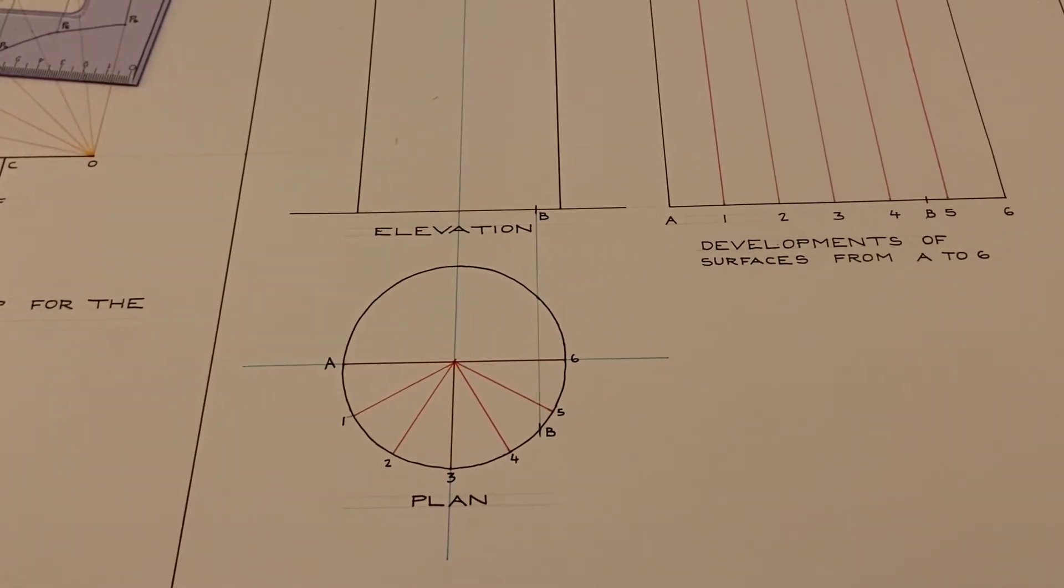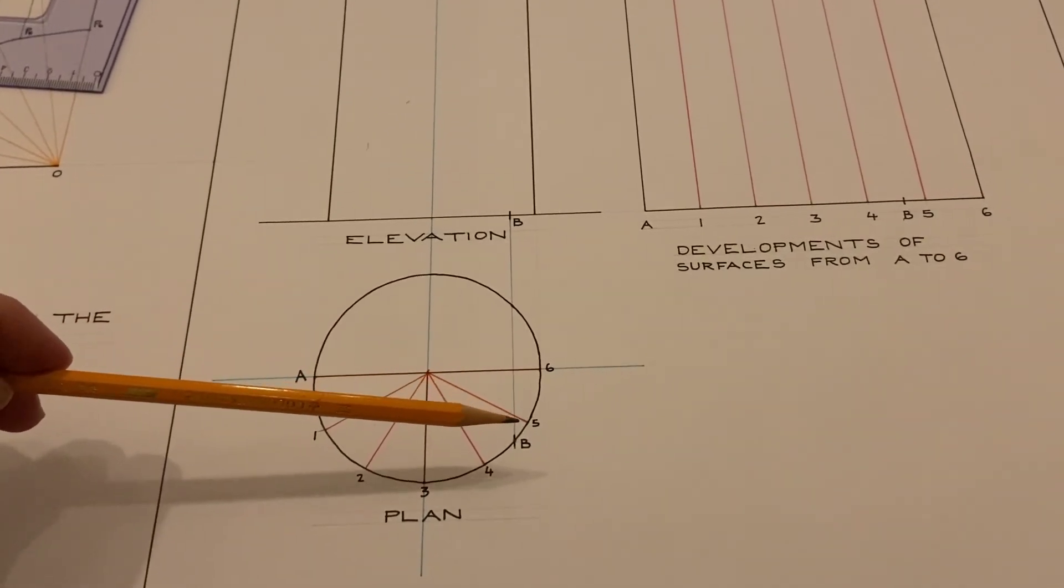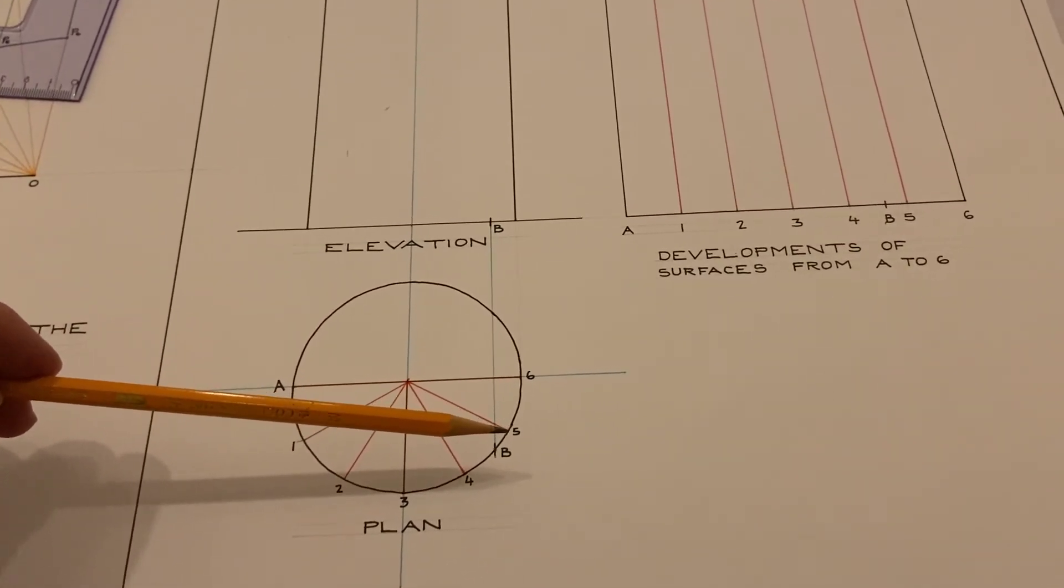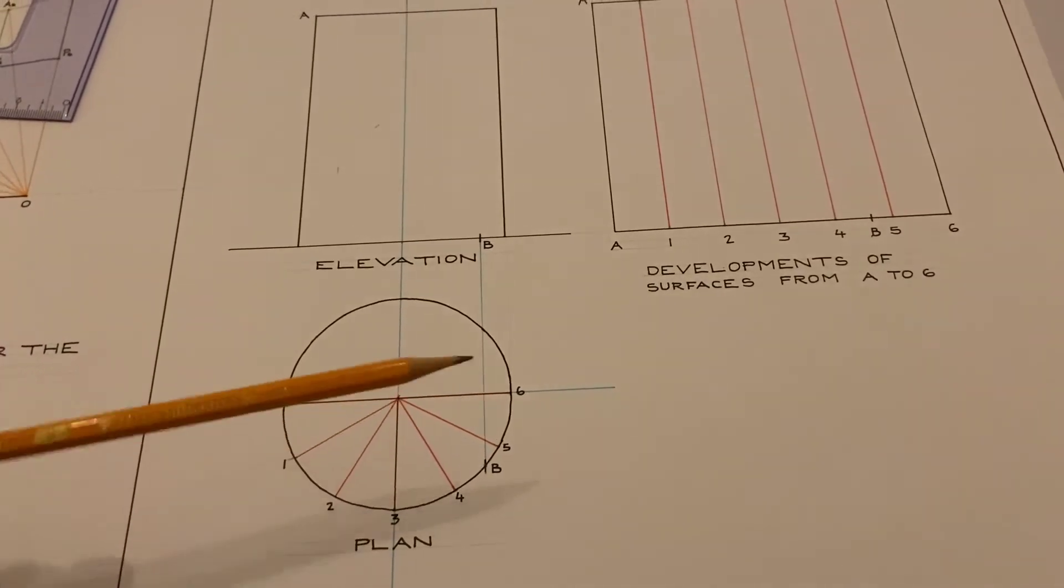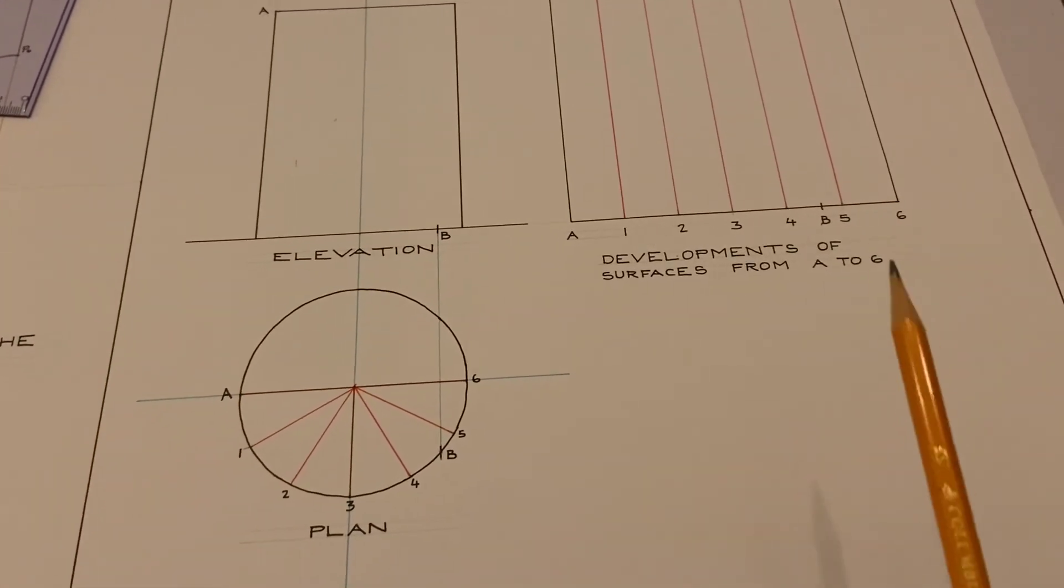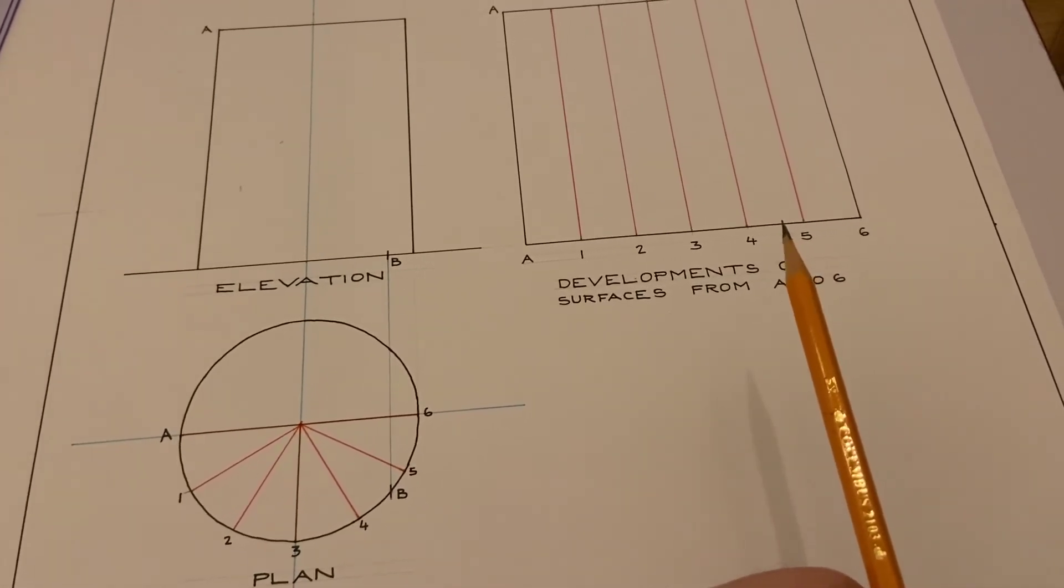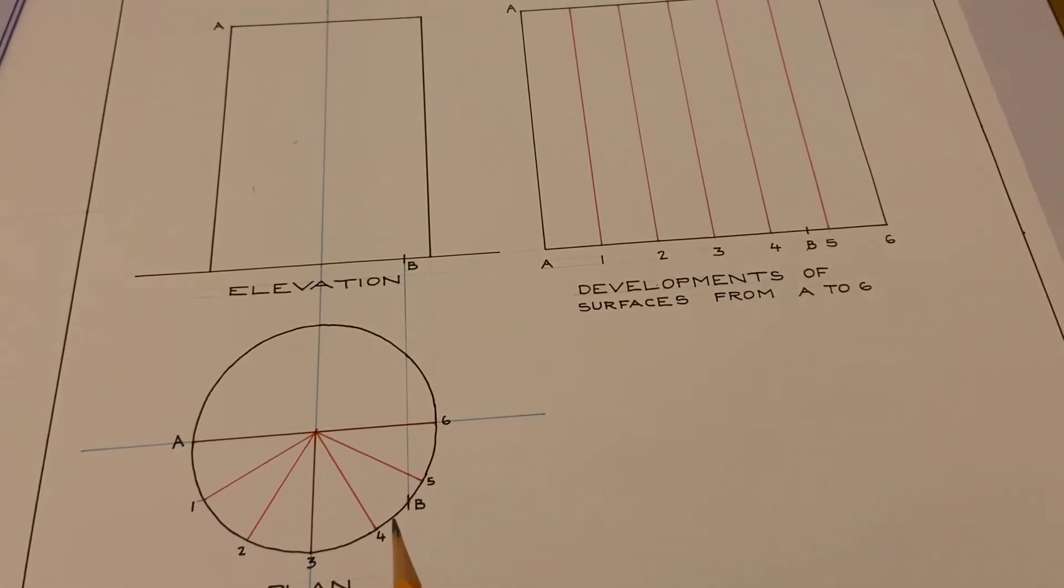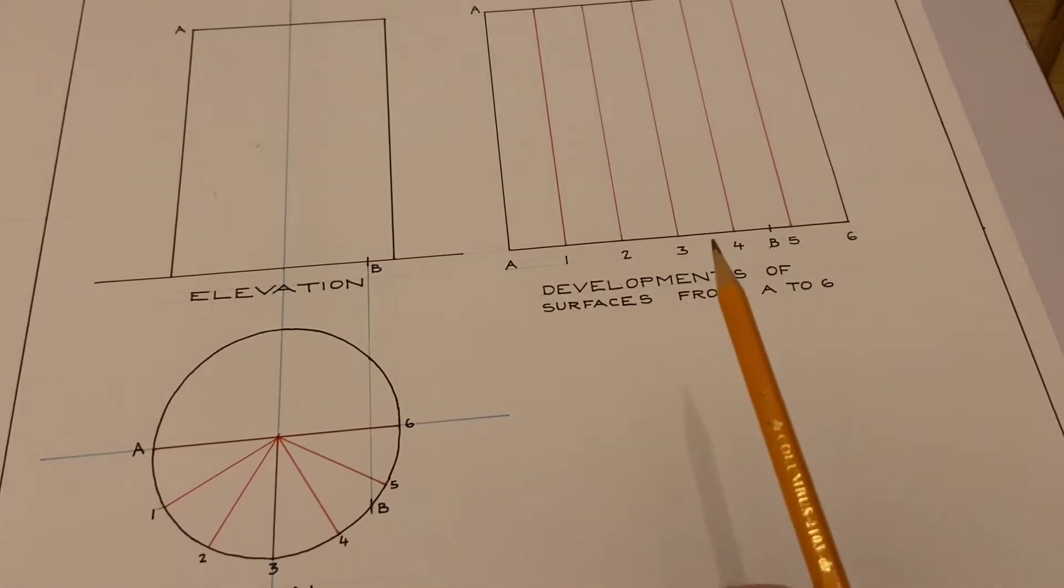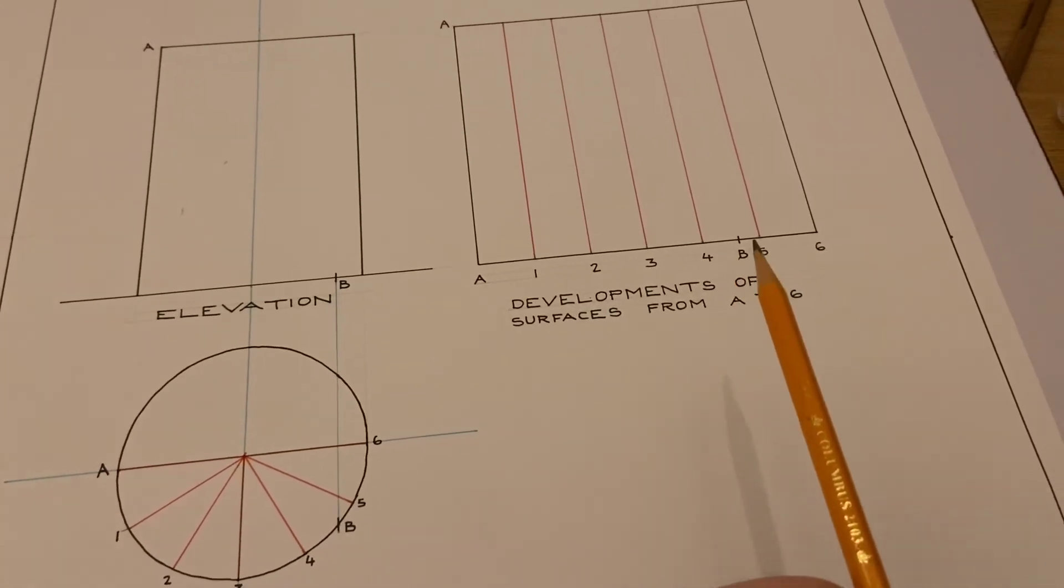So using your compass take the distance from 5 to B the distance there from 5 put the point of your compass on 5 and open it out to B and mark that distance then from 5 back into this position here. You can see that point B lies between 4 and 5 and therefore it has to lie between 4 and 5 on the development here.